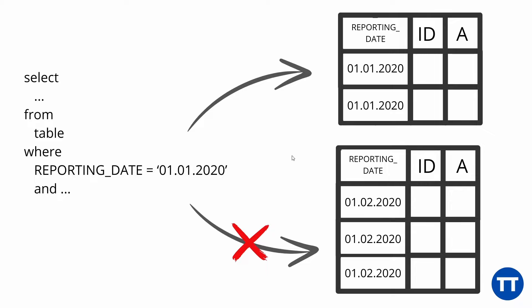Now you have to understand that if you have, say, 5 years of history — 5 years times 12 months — that is 60 partitions. The key insight is that your query, instead of reading 60 times more data, just reads one partition, which is of course much, much quicker.